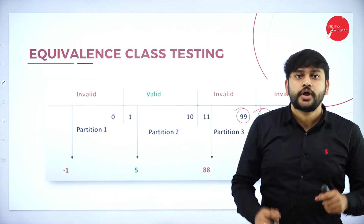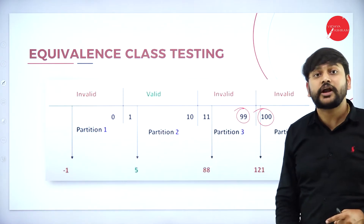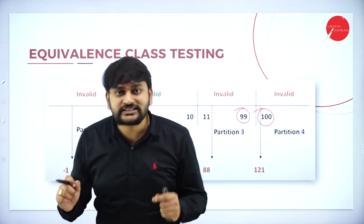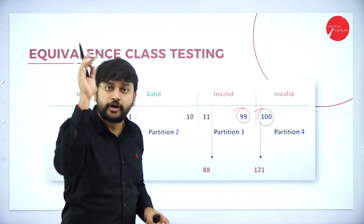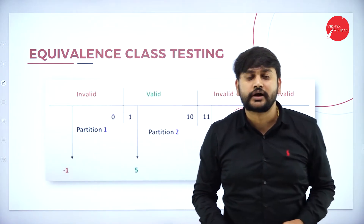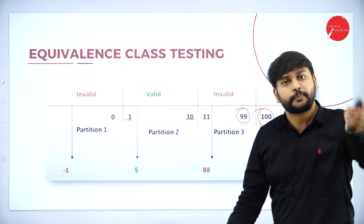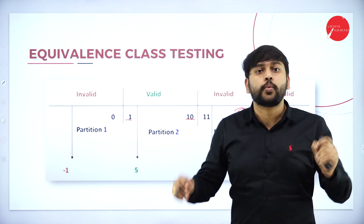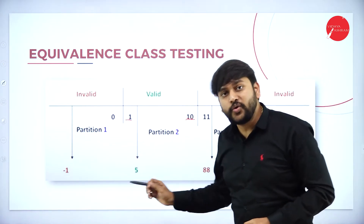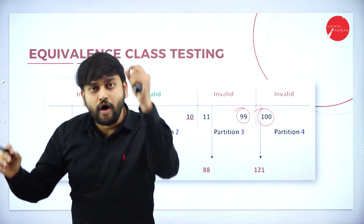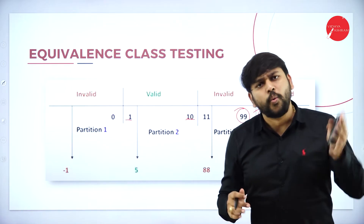What I'm doing is I will take any one number from a partition. If that number passes the test condition, then all the remaining numbers in that partition will also pass the condition. I repeat: I will randomly pick any one number from the range 1 to 10, and if it passes, every other number in that partition passes the test.